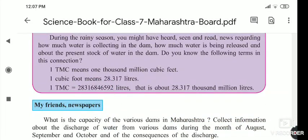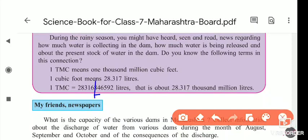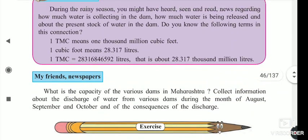That much litre of water is filled in one TMC. As you know, if this number has 8, which is greater than five, that's why the number in front of it — that is six — we are making it seven. So its short form is 28,317,000,000 litres of water filled in one TMC.